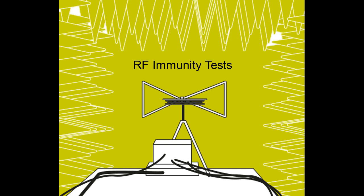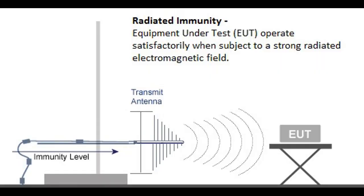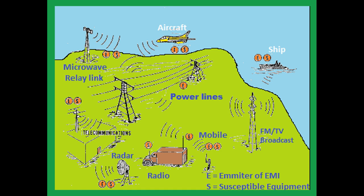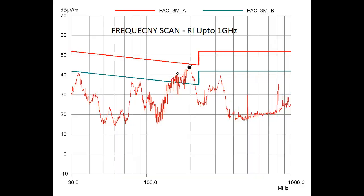Hello audience. Today we will discuss radiated RF immunity. Immunity testing requires that the equipment under test operate satisfactorily when subject to a strong radiated electromagnetic field, such as might be created by cell phones and other intentional radiators, and RF noise that might be caused, inadvertently or otherwise, by industrial processes. This requires a frequency scan at a certain fixed level of field strength.